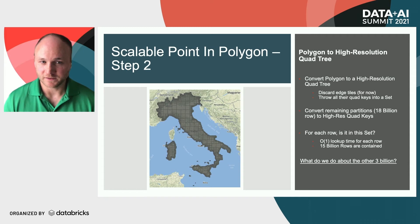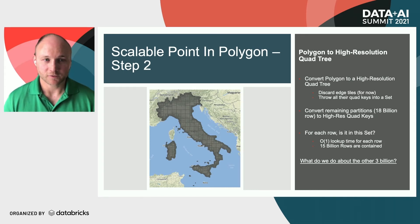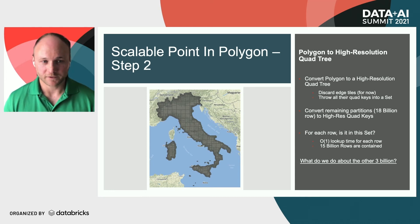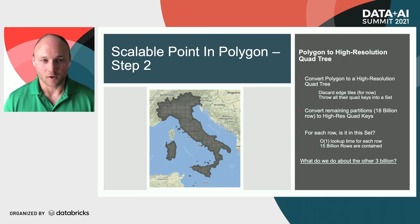Now that we've reduced the table from one trillion to 18 billion rows, our next step is to identify most of the points within the polygon by constructing a full quad tree within the boundaries of the polygon. From the polygon geometry that we input, we construct a quad tree fully contained within these boundaries, take the keys from each node in the tree and put them into a large set. Then for each of these 18 billion rows, we do a latitude-longitude to quad tree key conversion at a very high resolution, checking whether each row belongs to that larger quad key set constructed from the boundary. We find that 15 billion points are indeed contained in the quad tree, but the question remains: what about the other 3 billion?